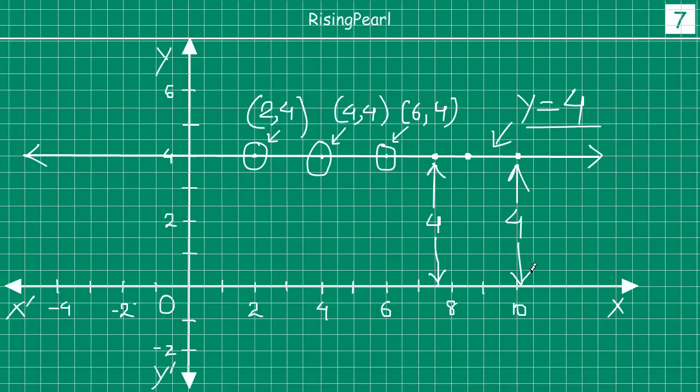So we saw dosto, if you have an equation like this, y equals to 4, or y equals to any positive number, then you will see that you will get an equation. The line when you draw, it will be always, always, always parallel to x axis.